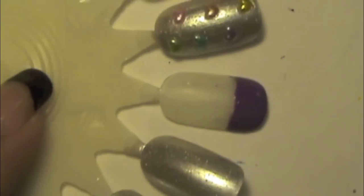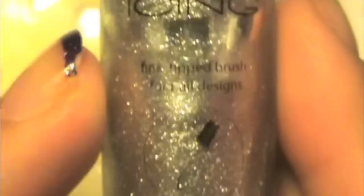And once you're done with this, I'm going to grab a silver striper, and this one is by Icing, and it has no particular name. And I'm just going to do a line right under the tips.